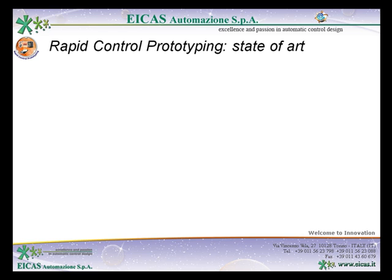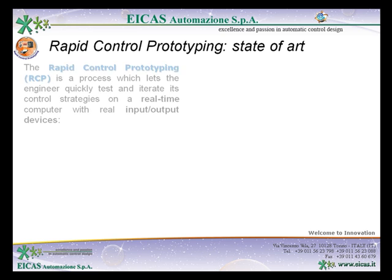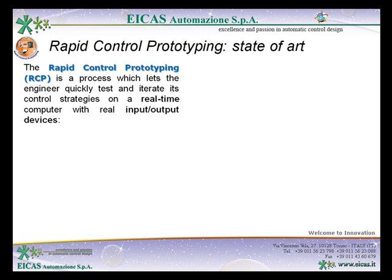One of the final phases in developing a control system application consists in porting the control algorithm software code from the simulation environment to the final hardware target, on which the application will run, and where it is quite difficult to find and fix possible problems and bugs. For these reasons, it's important to consider an intermediate control design phase: the Rapid Control Prototyping.